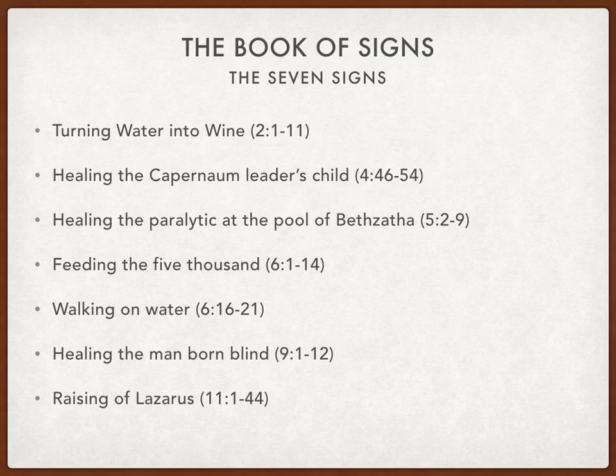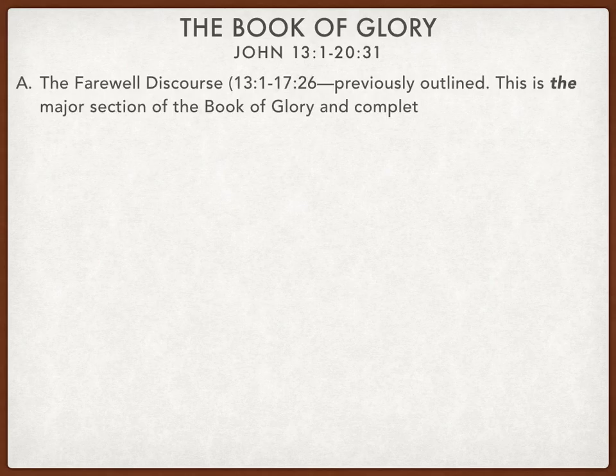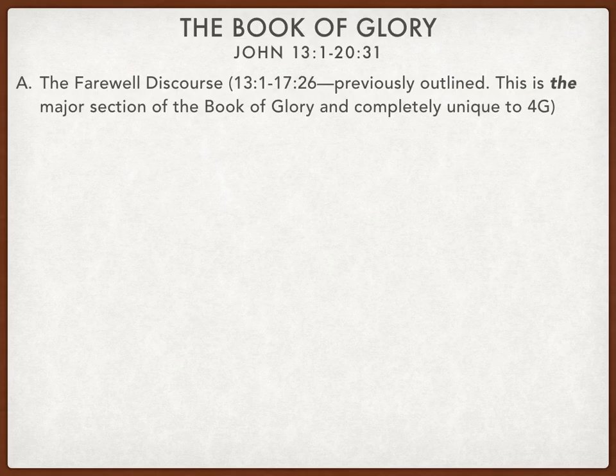We move from the Book of Signs to the Book of Glory. This is a sketch of an eagle — that's 'Johannes' in Latin — symbolic of the Gospel of John. The Book of Glory starts off with the farewell discourse. You can go back to the last lecture for a more detailed outline of the farewell discourse. This is the major section of the Book of Glory and it's completely unique to the fourth Gospel — none of this happens in the Synoptic Gospels.